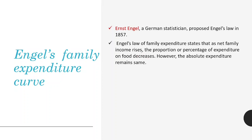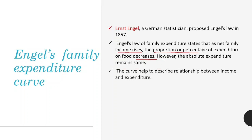This means that when your income rises, the proportion of your income spent on necessary goods like food, shelter, clothing, etc. decreases. More of your income will be spent on luxury goods and less of that increase in income will be spent on necessities. You can easily relate this with your day-to-day life. Engel's curve helps describe the relationship between income and expenditure.